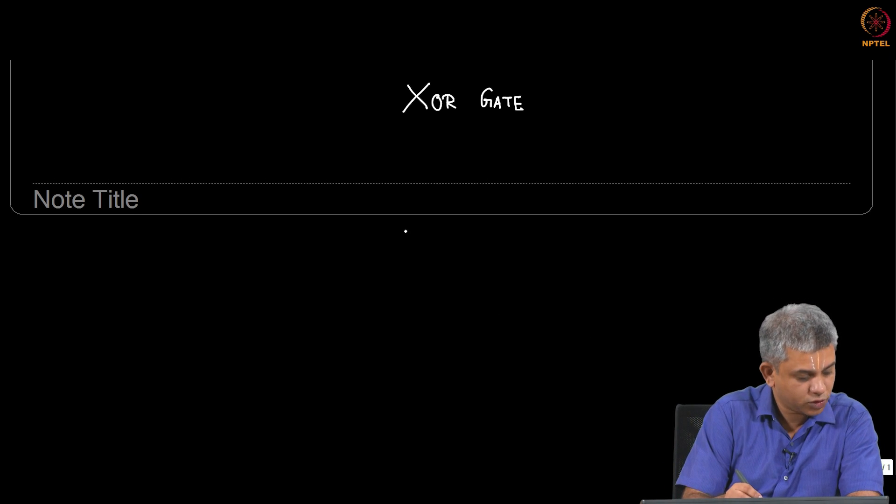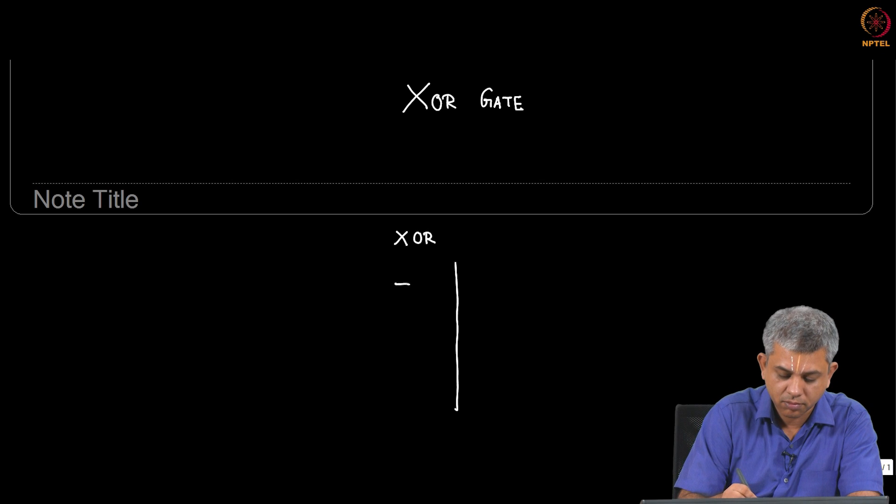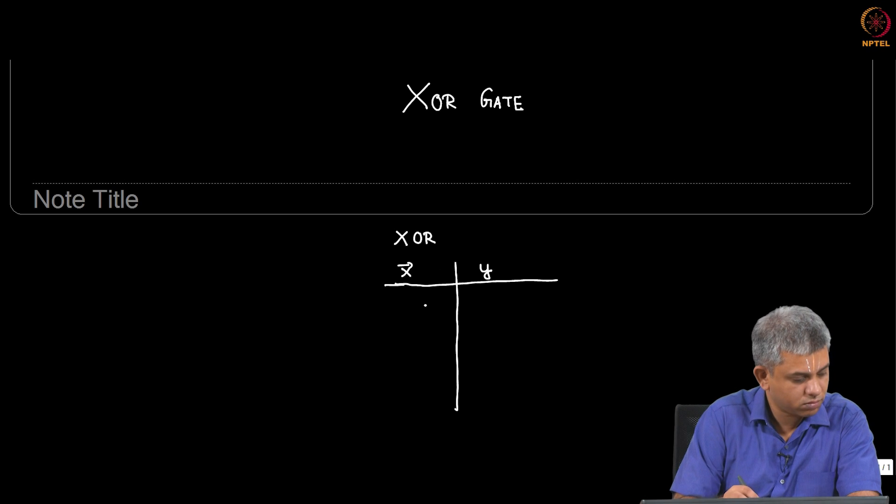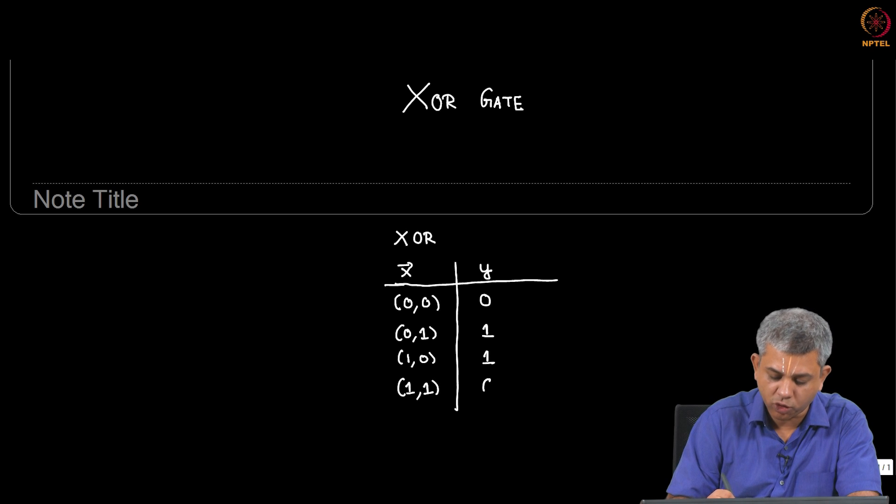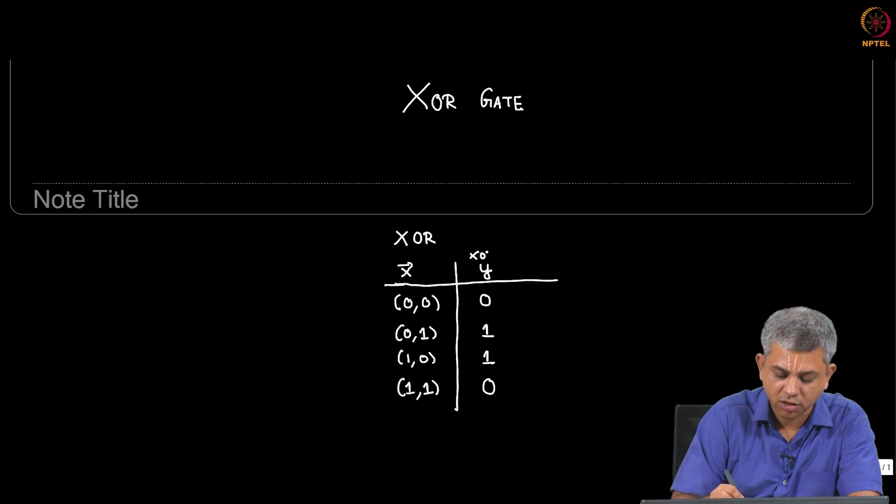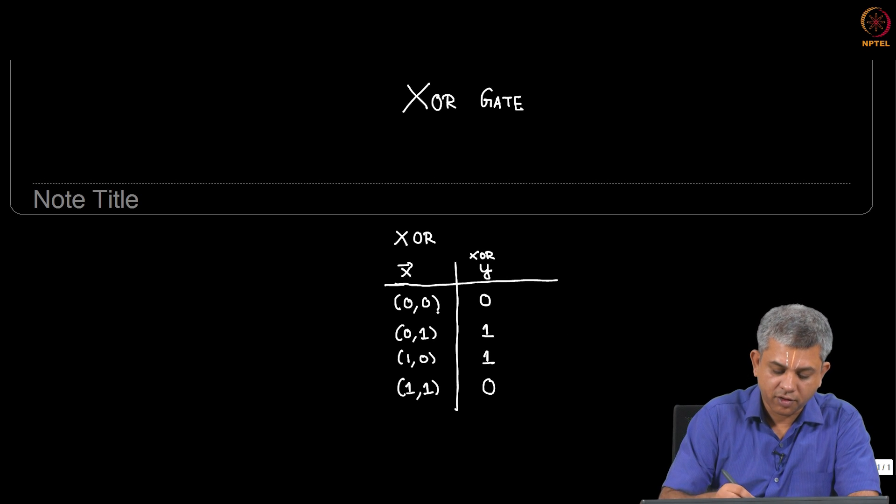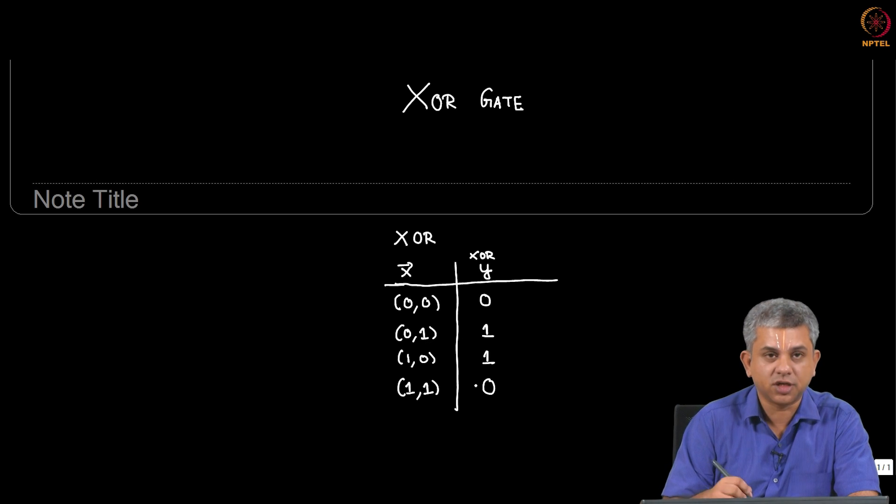So what is XOR? We will write it once again as a truth table. XOR gives 1 or true as an output if X and Y or X1 and X2 are different. It gives 1 as output. If both are the same it gives 0 as output.